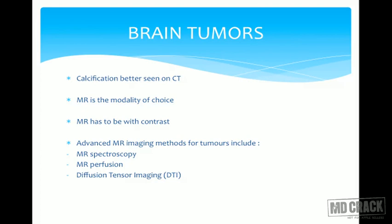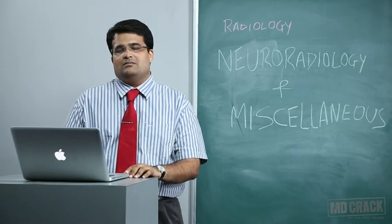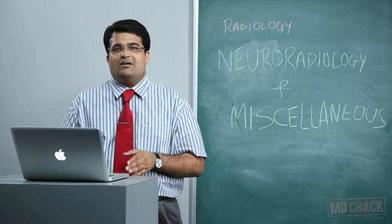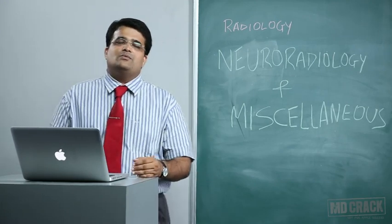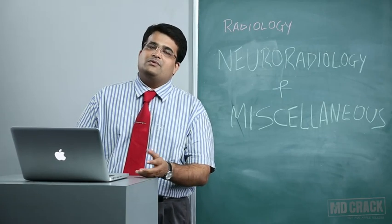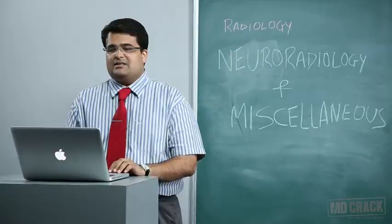For brain tumors, calcification is best seen on CT. MRI with contrast is the modality of choice overall. Advanced MR imaging methods for tumor evaluation include MR spectroscopy, MR perfusion, and diffusion tensor imaging. MR spectroscopy reveals metabolites such as lipids, lactate, or alanine within the mass, and MR perfusion shows whether the lesion is hyperperfused or hypoperfused.